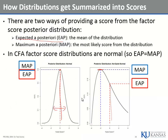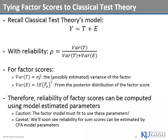I wanted to tie all this stuff with factor scores, which are sort of out there, to classical test theory things, because they're actually the same quantities — just expressed on different scales. Remember: Y equals true score plus error. We have variance of true score and variance of error. The true score in a factor model is the factor itself. The latent trait is the true score.